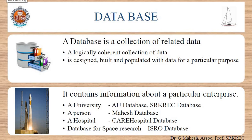Let us see the definition of a database. A database is a collection of related data containing information about a particular enterprise. A database has the following implicit properties: it is a logically coherent collection of data with some inherent meaning, and it is designed, built, and populated with data for a particular purpose. Logically coherent means, for example, a college database should contain faculty data and student data, but not doctor's data. 'Designed, built, and populated' means the database should be well-designed using a table-like structure, and then data should be inserted and retrieved properly.